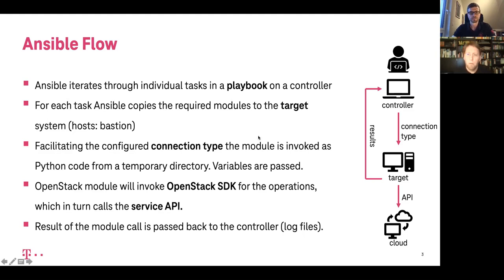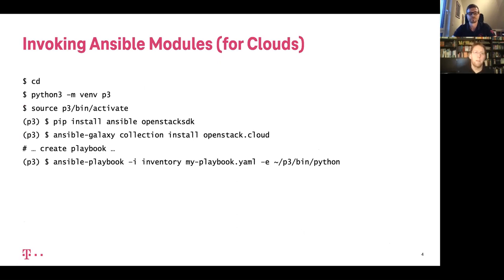Maybe we should do a brief example on that. As you can see here, this is the installation and invocation of a very simple playbook. We just go to our home directory, create a virtual environment, activate it, and install both Ansible itself and the OpenStack SDK. This works for every Linux machine. If we want to issue commands that actually work on the OpenStack SDK itself, we need the Ansible collection for that, which is called openstack.cloud and can be installed with Ansible Galaxy.